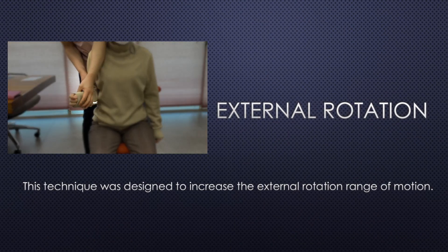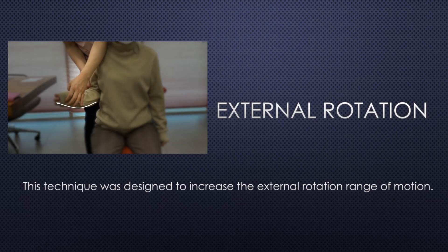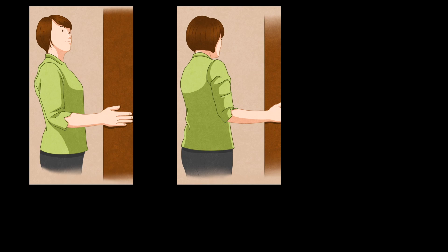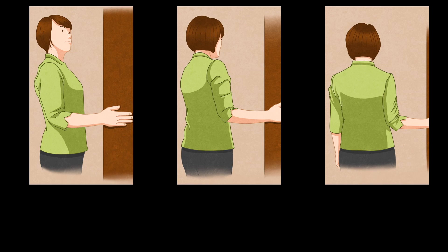External rotation. This technique was designed to increase the external rotation range of motion. Select a wall or column and stand next to it. Attach the elbow to the side of the body and put the forearm against the wall. Keep the elbow angle at right angles and do not bend the wrist. Turn your arm outward as much as possible to the extent there is no pain.